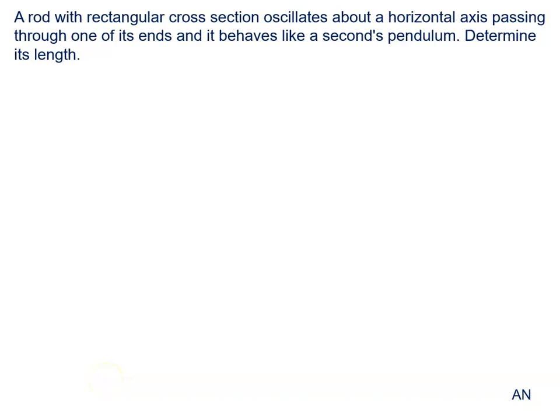A rod with rectangular cross section oscillates about a horizontal axis passing through one of its ends. This is the situation. This is the rod. Length is not given to us. We can say length is suppose L.